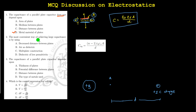The next MCQ: the most commonly convenient way of achieving a large capacitor is by using decreased distance between the plates, which achieves higher capacitance, or by increasing the area of the plate, which also achieves higher capacitance. Using air as a dielectric medium — since relative permittivity is one — the capacitance value gets decreased.